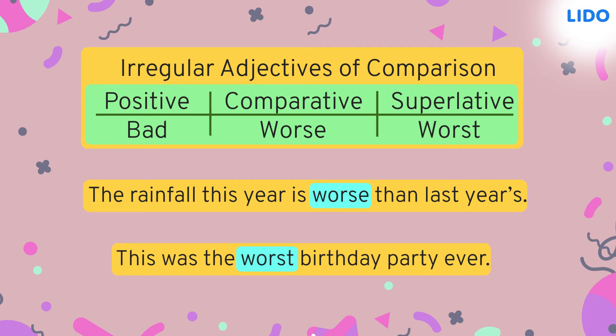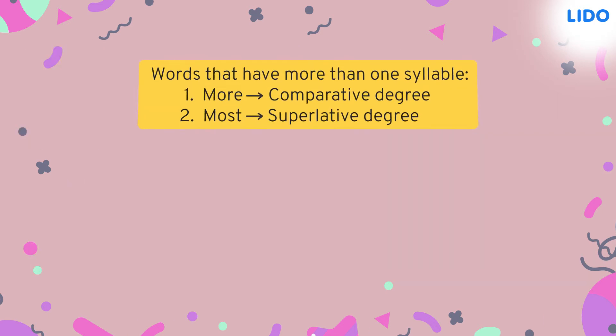We use 'the' in superlative sentences because we compared one thing — a birthday party — to all other birthday parties. But wait, there's one more rule.